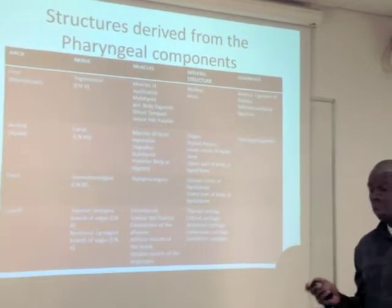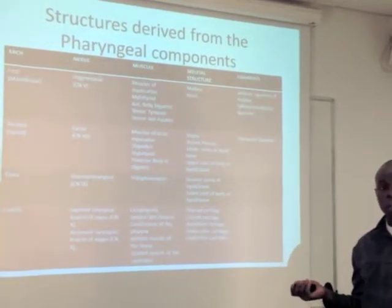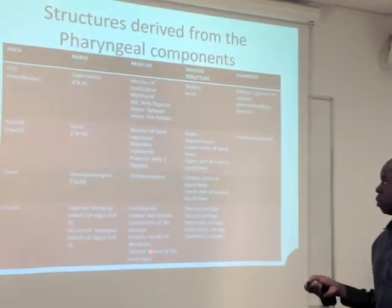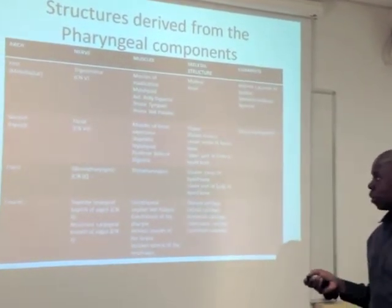That's the larynx's main job. The other function of the larynx is in phonation, which allows you to hear what I'm saying just now. So that's going to be the responsibility of the vagus nerve through the fourth arch.